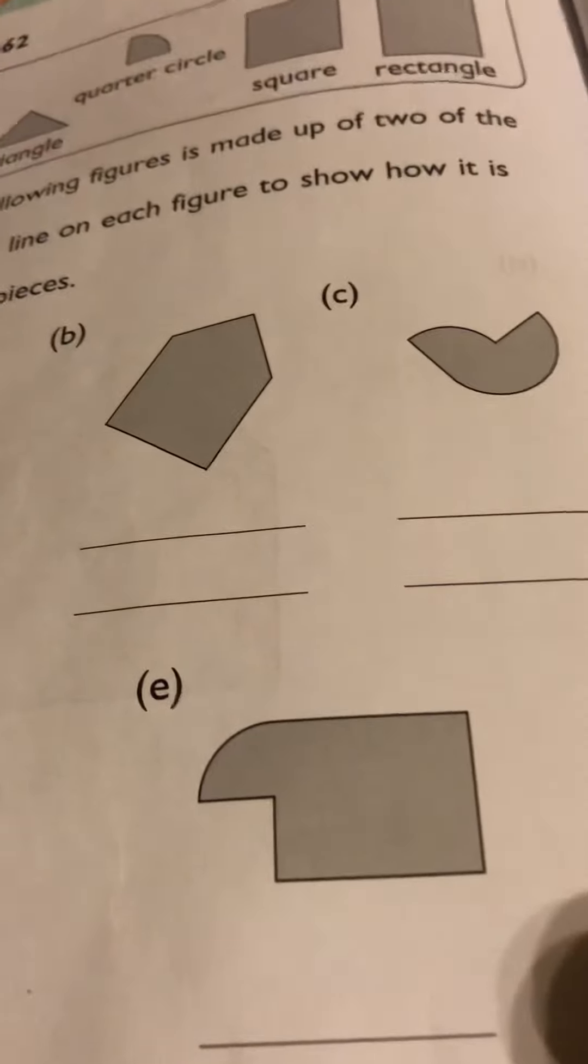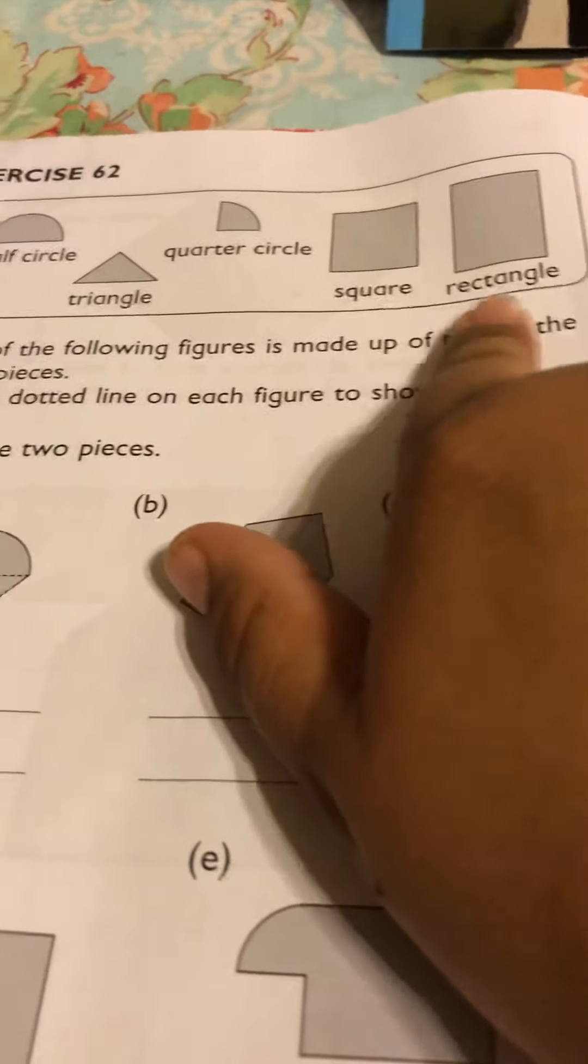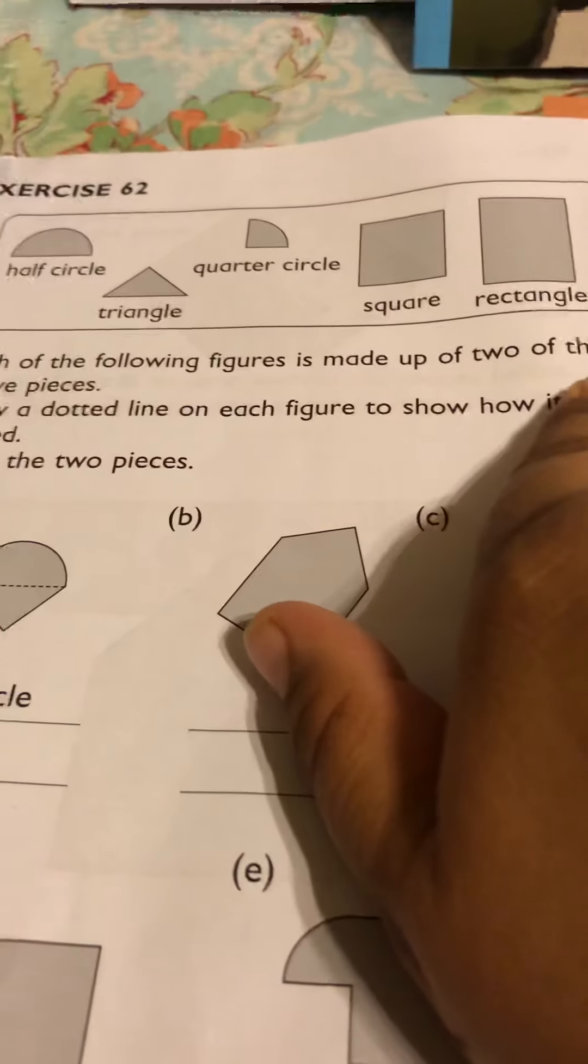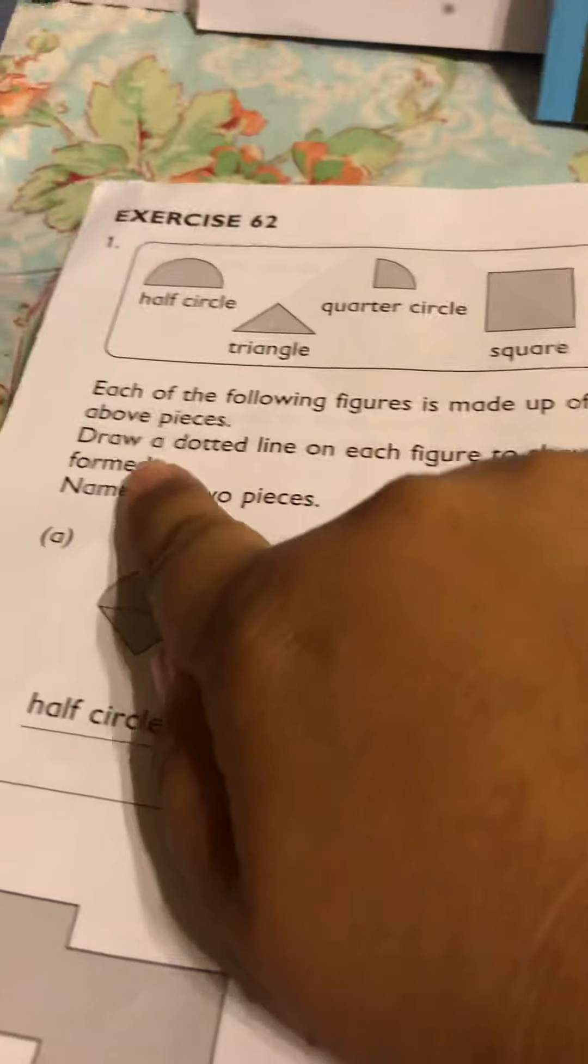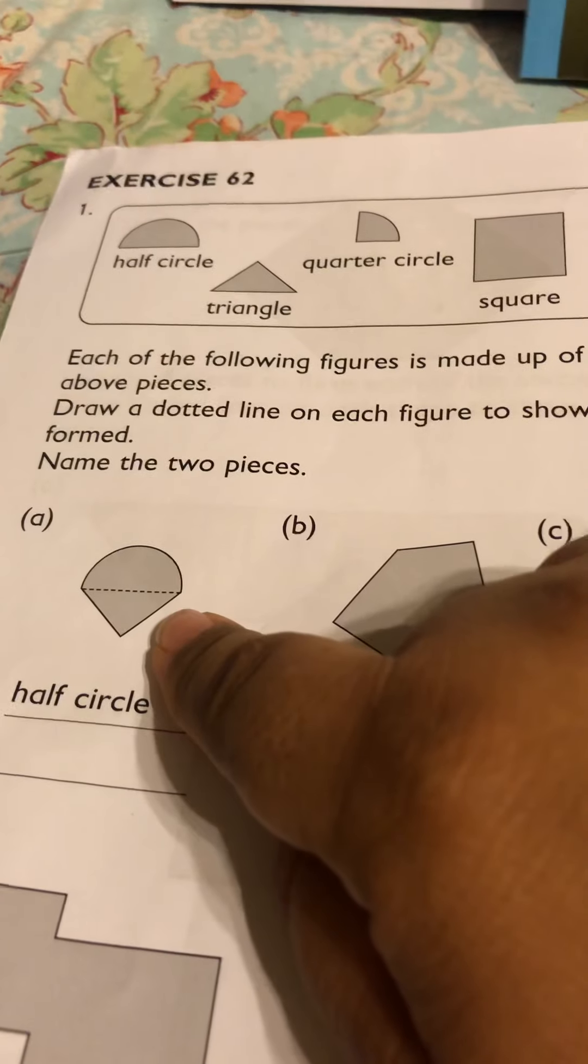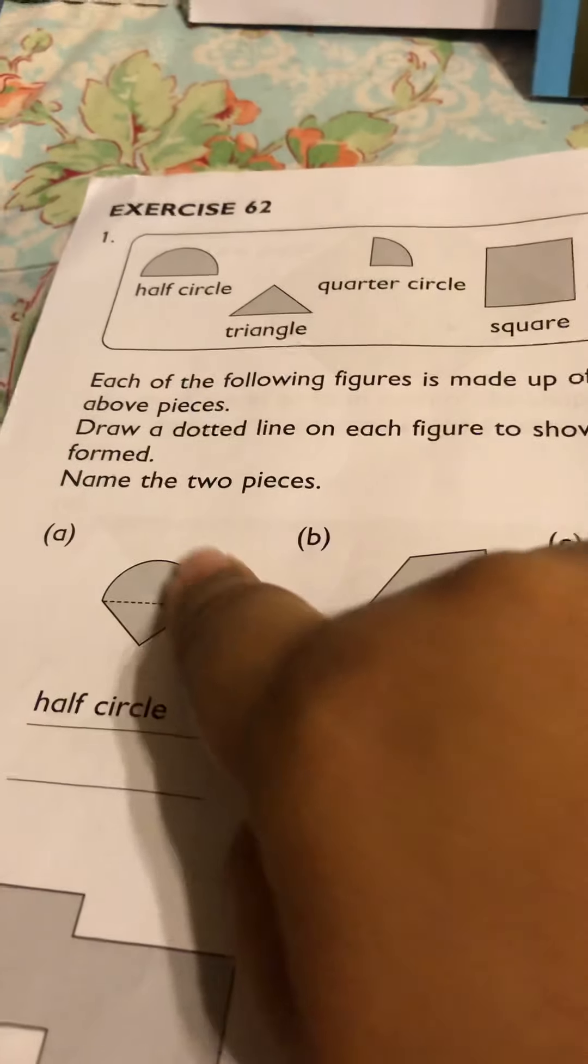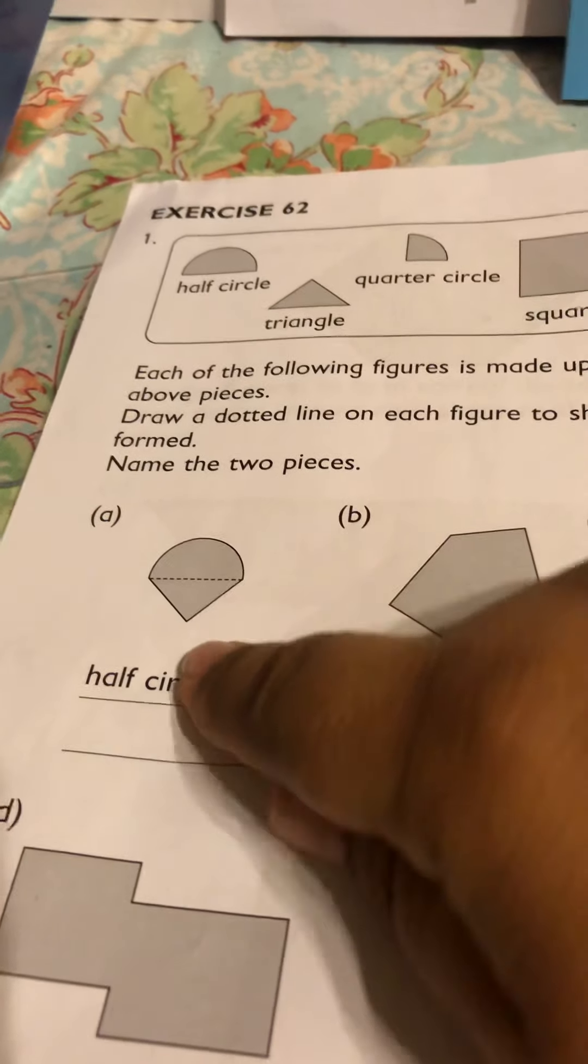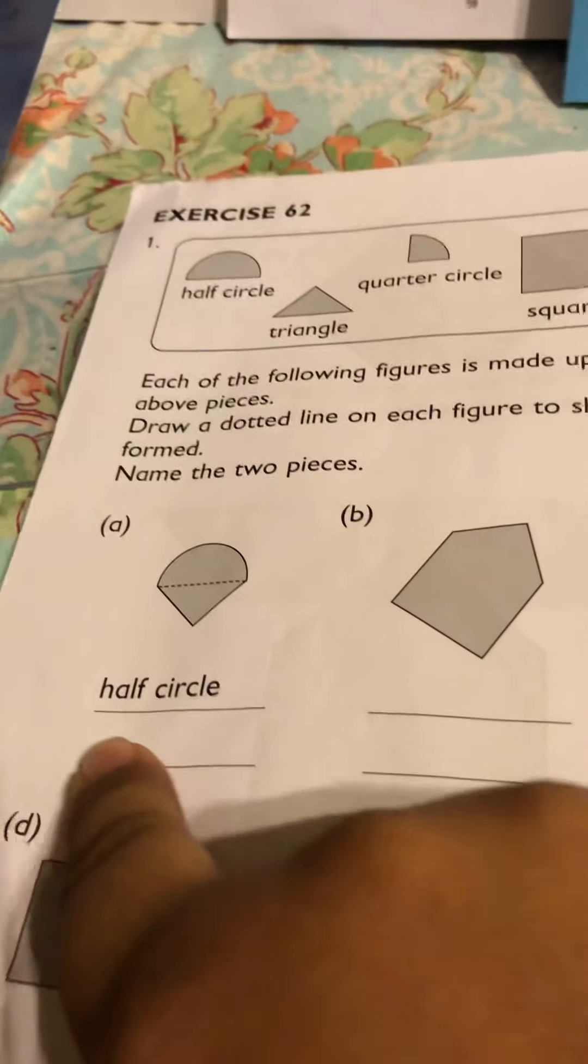Now on this page all you will be doing is taking the half circle, which is the hemisphere, and taking the triangle, quarter circle, square and rectangle. Each of the following figures is made up of two of the above pieces. So draw a dotted line on each figure to show how it is formed. Name the two pieces. So for instance here we know that the half circle and the triangle made this shape. So here they wrote half circle because that's the half circle, and then what other shape formed this shape? A triangle. So you use this word triangle and write it there.